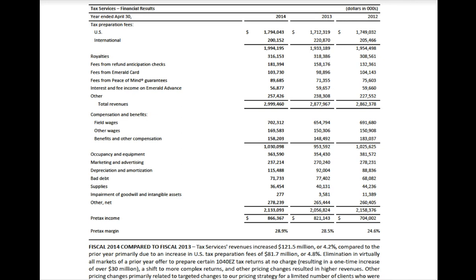We're going to take all that data and turn it into a financial statement such as H&R Block's 2014 income statement. It shows that revenues were $2,999,460,000. We had to categorize and summarize all the different locations' revenues into this one report. For expenses, we have field wages, other wages, marketing and advertising expenses, depreciation, bad debt — all different expenses summarized to report on the financial statements.